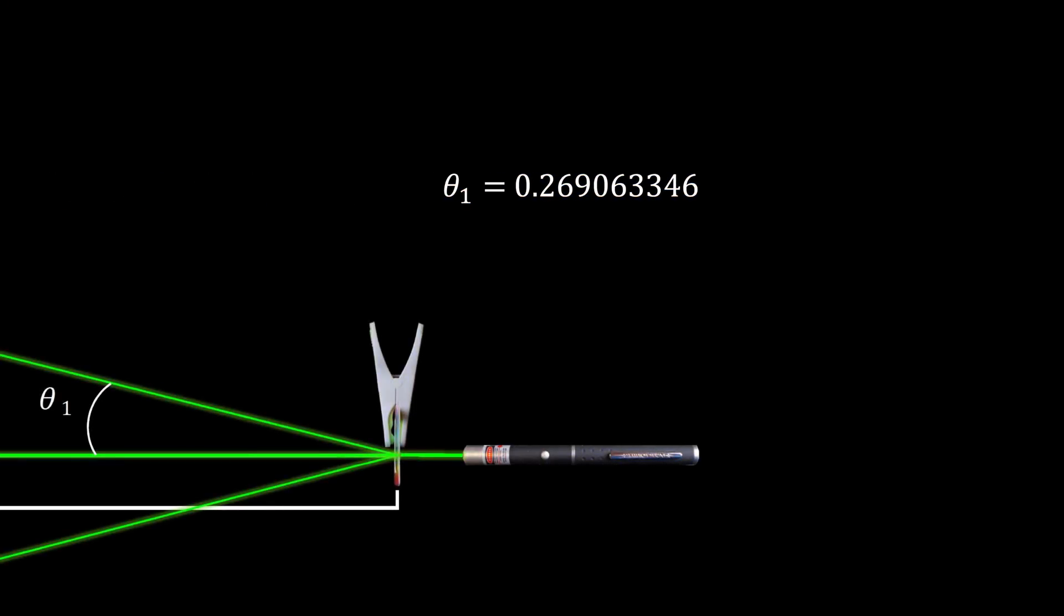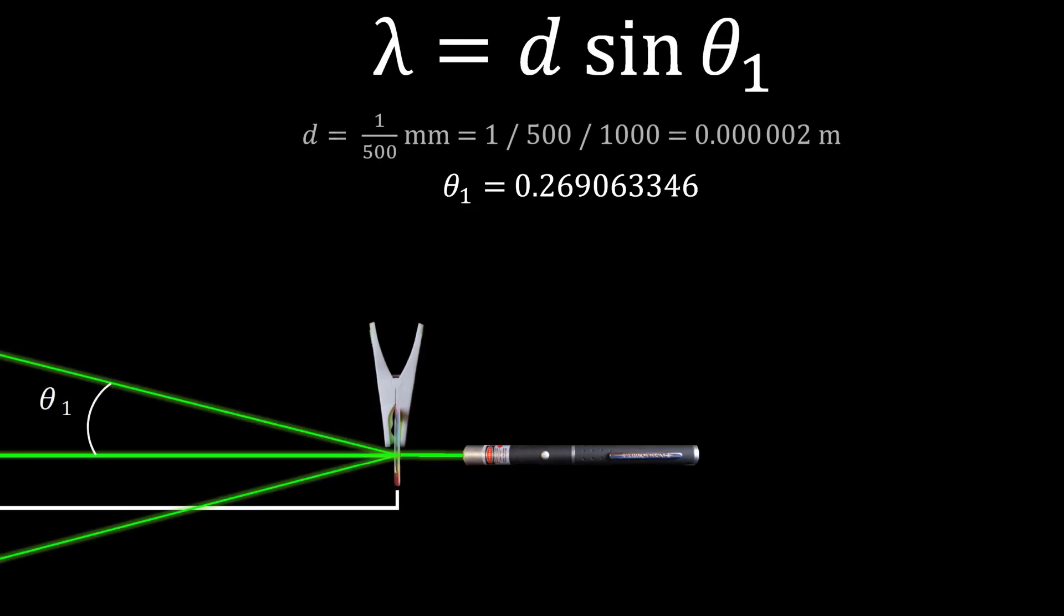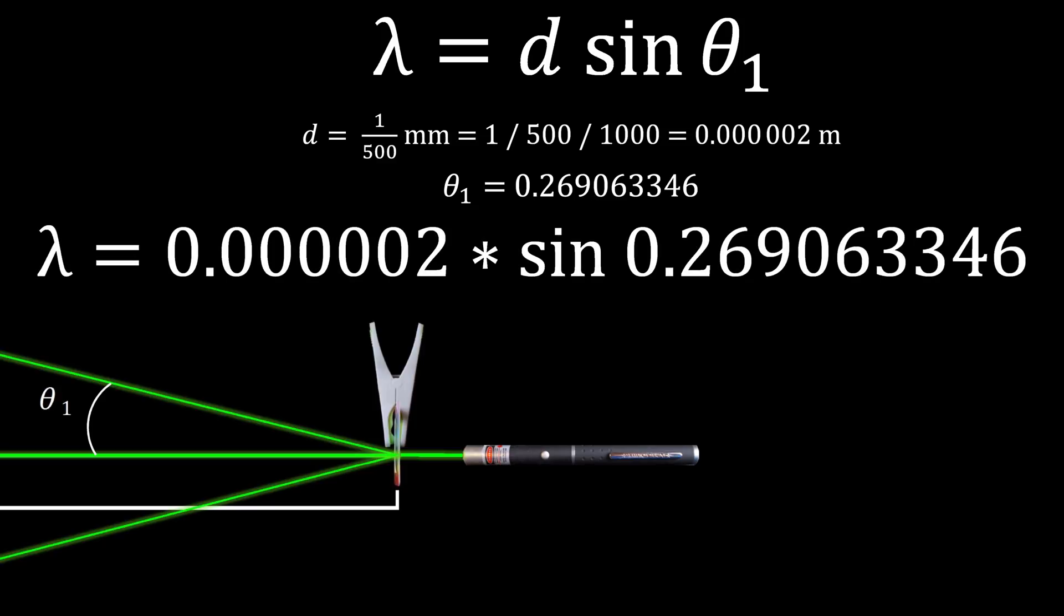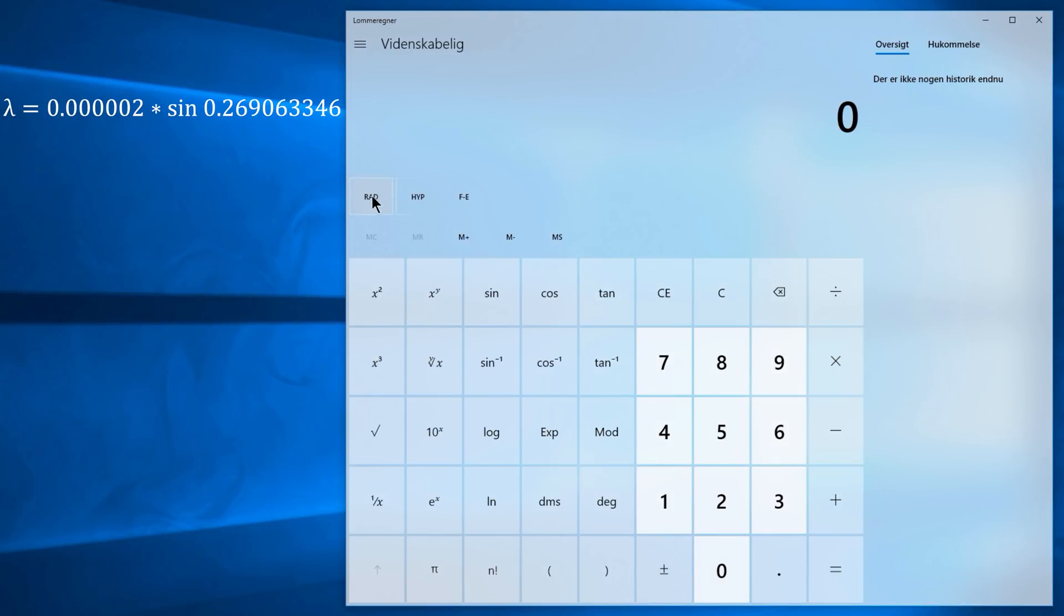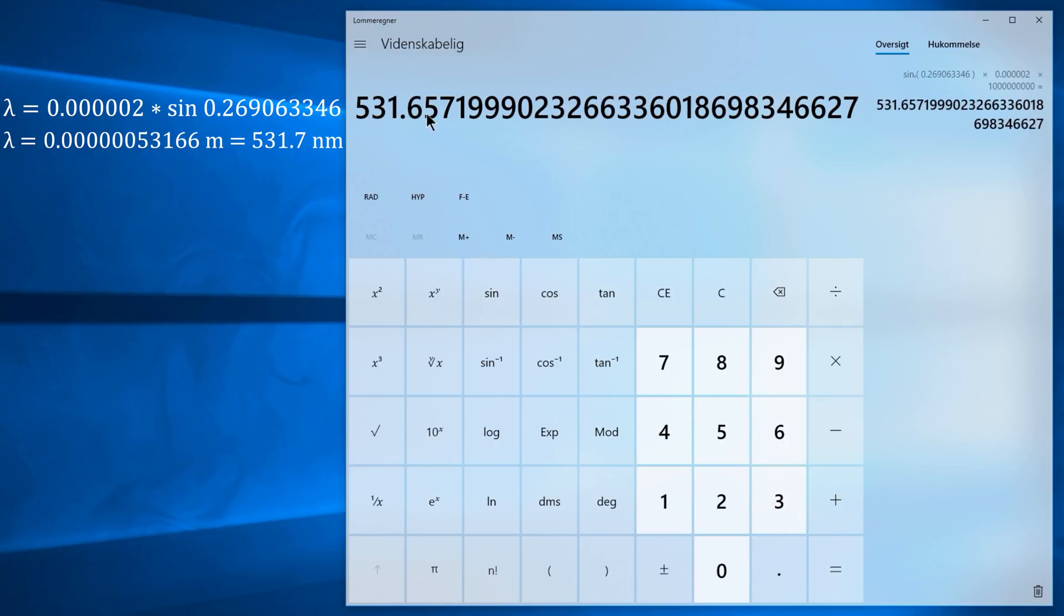Alright with this angle known we can finally calculate the wavelength. D is the distance between the slits in the diffraction grating. In this case two micrometers. Let's see how close I am to the 532 nanometers on the label. The result is in meters. By multiplying by a billion the result is turned into nanometers. A-ha! Science works! I have just confirmed the wavelength of the laser in my kitchen, within a third of a billionth of a meter. Amazing. Right?